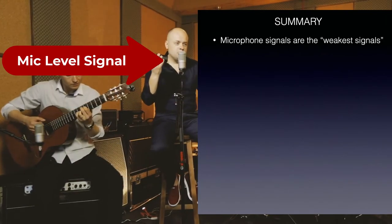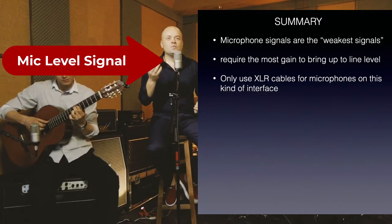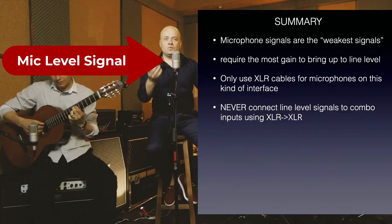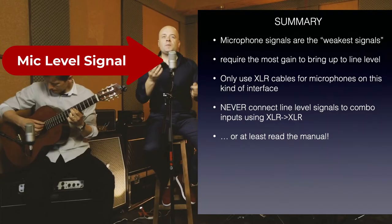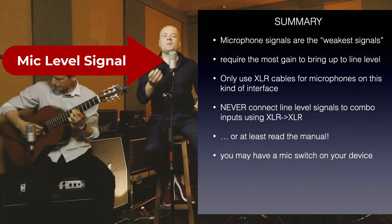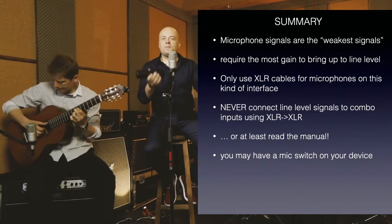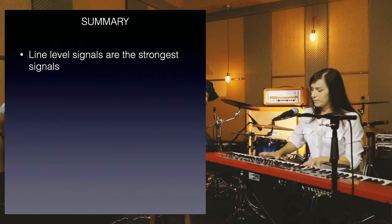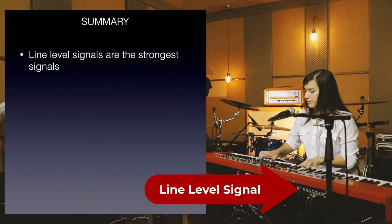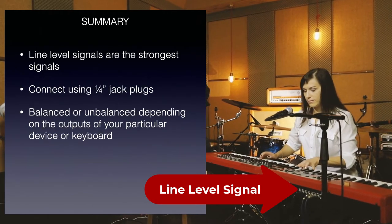Here's a quick summary. Microphone signals are the weakest and require the most gain — only ever connect microphones using XLR cables. Never connect line level signals to combo inputs using XLR, or at least refer to the manual for your particular mixer or interface to check this, as it may be that you also have a mic switch on your device. Only turn on phantom power if you're connecting condenser mics via XLR. Line level signals are the strongest and should be connected using quarter inch jack plugs, either balanced or unbalanced depending on your particular device.